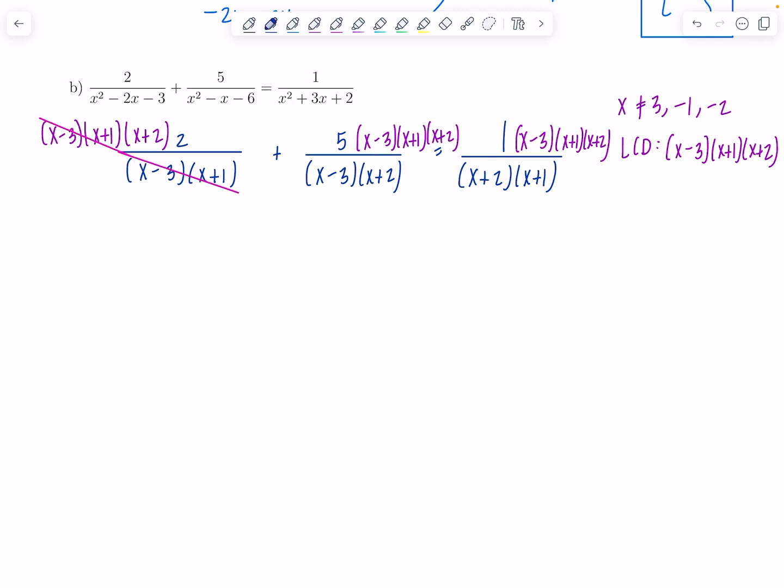So, x minus 3, x plus 1 cancels. All I have left is 2 times x plus 2 plus, who cancels here? All of this with x minus 3, x plus 2. So, we've just got 5 and x plus 1. And then, over here, this is all gone. This is gone. And I just have x minus 3. Beautiful.